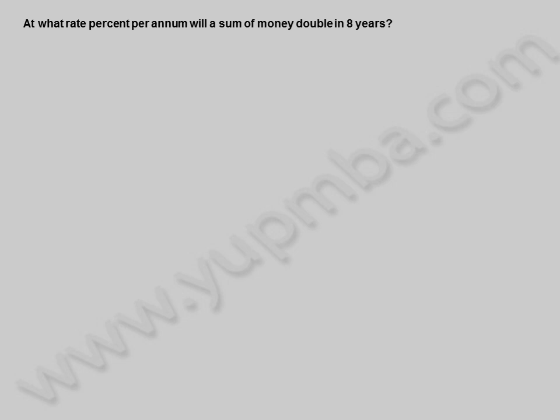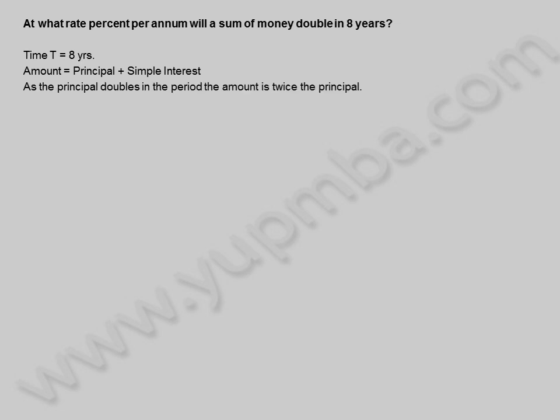At what rate percent per annum will a sum of money double in eight years? Time is equal to 8 years. Amount is equal to principle plus simple interest. As the principle doubles in the period, the amount is twice the principle, so amount is equal to 2 times principle.